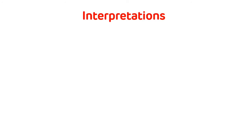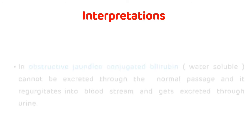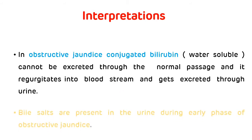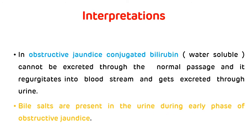Now the interpretation of the Haze Sulphur Flower test. In obstructive jaundice, conjugated bilirubin cannot be excreted through the normal passage and it regurgitates into the bloodstream, then gets excreted through urine. So bile salts are present in the urine during the early phases of obstructive jaundice.